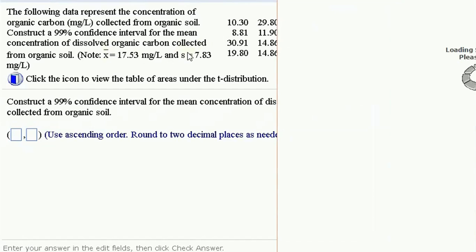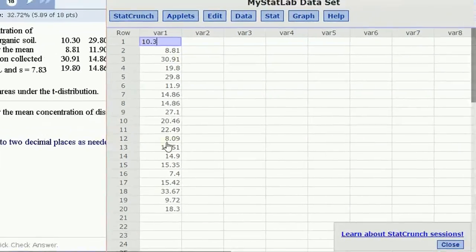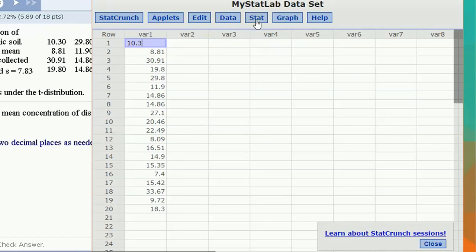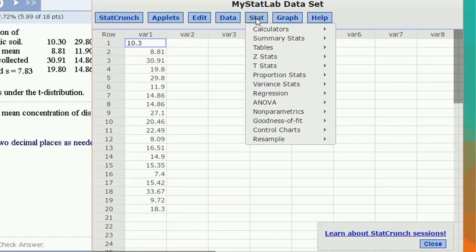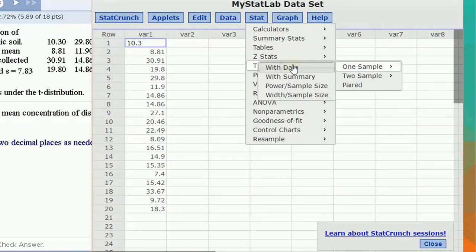Now it's giving us the sample stats actually, but let's just use the sample data to demonstrate how we can create the confidence interval using the data. It's just as easy as doing it with the sample stats. StatMenu, tStats, one sample with data.